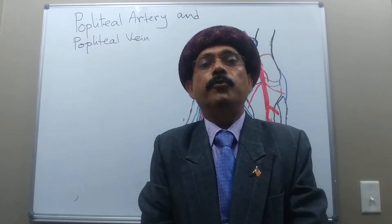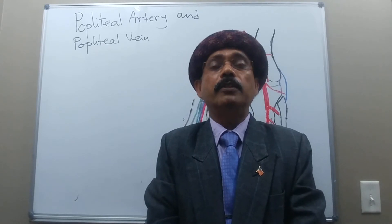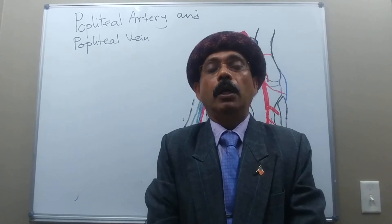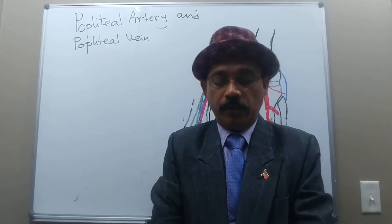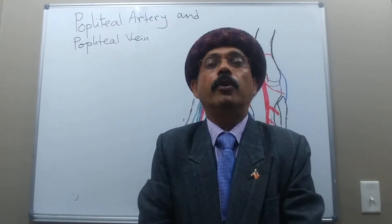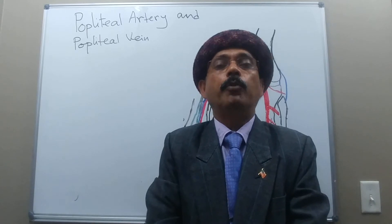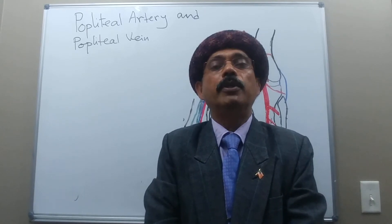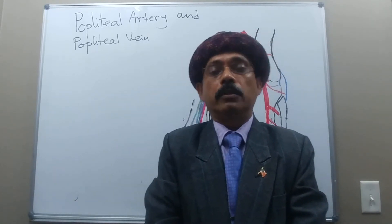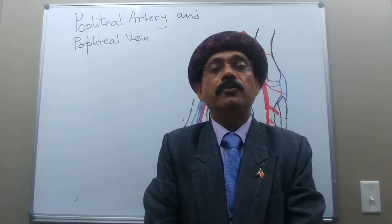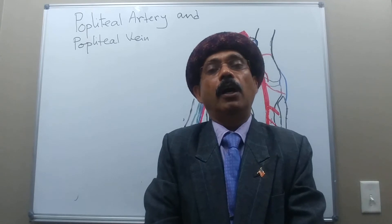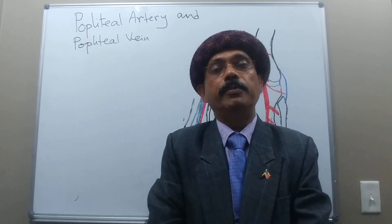Hello, my name is Dr. Diwan S. Raja. Today I will discuss about the anatomy of the popliteal artery and the popliteal vein. Popliteal artery and popliteal veins are the contents of the popliteal fossa. We know that popliteal fossa is a diamond-shaped depression extending from the lower third of the popliteal surface of the femur, the knee joint, and the upper part of the back of the tibia.